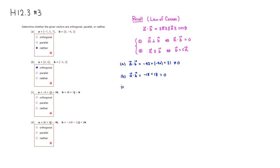Let's do part C. Again, computing A dot vector B: negative 1 times 6 is negative 6, plus 2 times 4 is positive 8, plus 2 times negative 1 is negative 2. This is actually equal to zero, so we know that it is orthogonal.